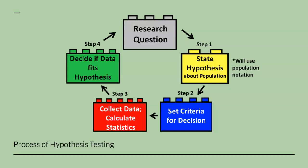This diagram illustrates the process of hypothesis testing. We will use the same four steps in conducting a hypothesis test with chi-square for goodness of fit, with some modifications along the way.